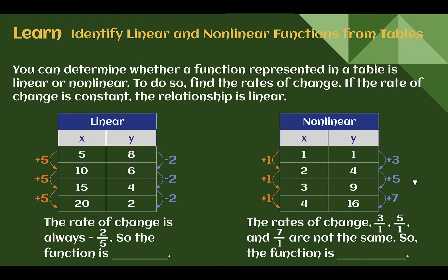Let's learn: identify linear and non-linear functions from tables. You can determine whether a function in a table is linear or non-linear by looking at the rate of change. If it has a constant rate of change, it is linear; if not, it is non-linear. In a linear function example, the y-value went down 2 for every 5 that x went up — the rate of change was negative 2 over 5 throughout. Constant rate of change means it's a linear function.